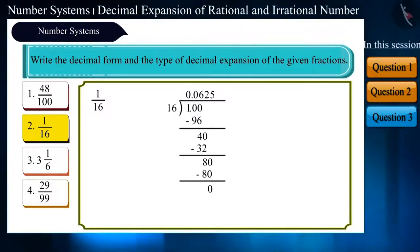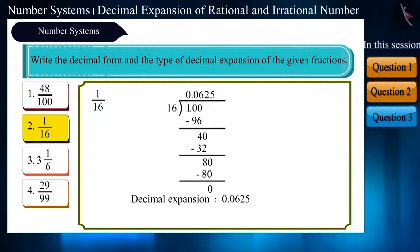On solving this too, the remainder obtained is 0. Its decimal expansion is 0.0625. Therefore, this is also a terminating decimal expansion.